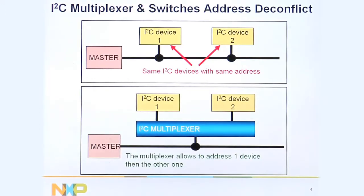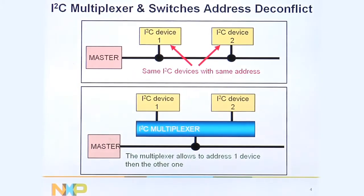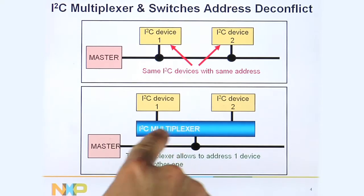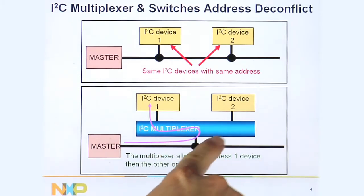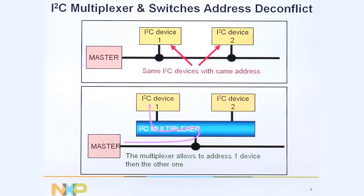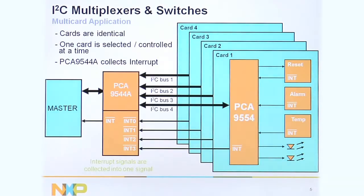The multiplexers were designed for address conflict. If you have two devices with the same address, they obviously can't be on the same bus because you don't know who you're talking to. If you put a multiplexer in there like the PCA9540B, you talk to this slave device. It opens up one channel and talks to this I2C slave, then you open up the other channel and talk to the other slave. This way there's a de-conflict of the address and you know which device you're talking to.